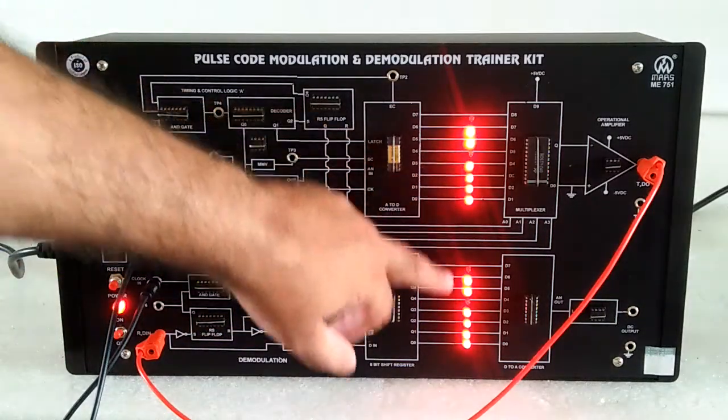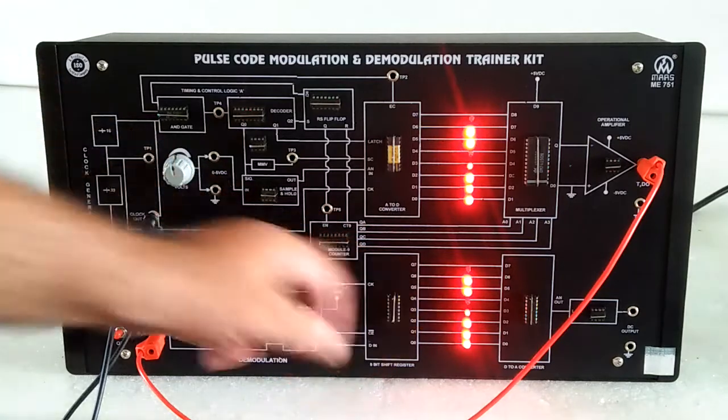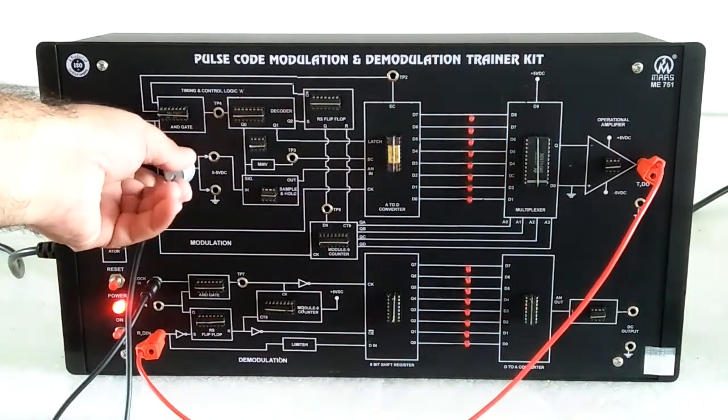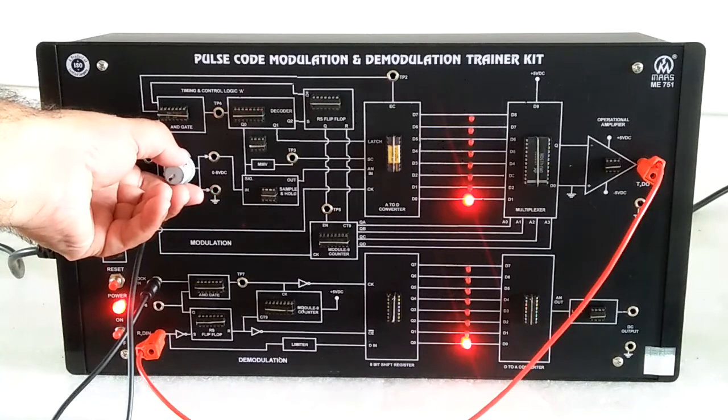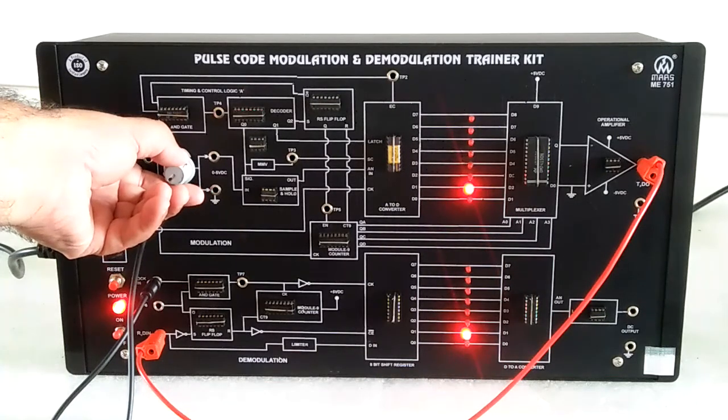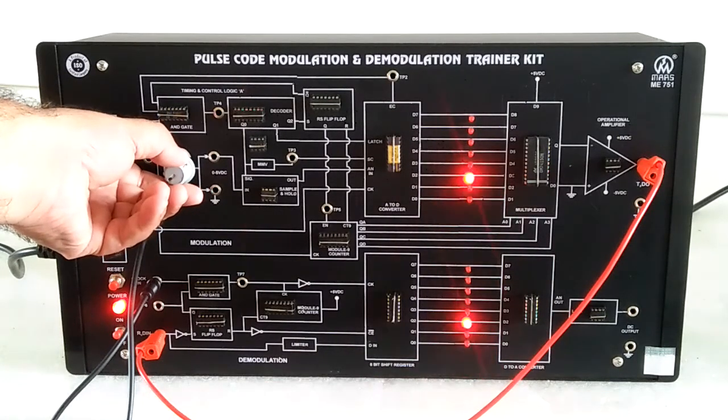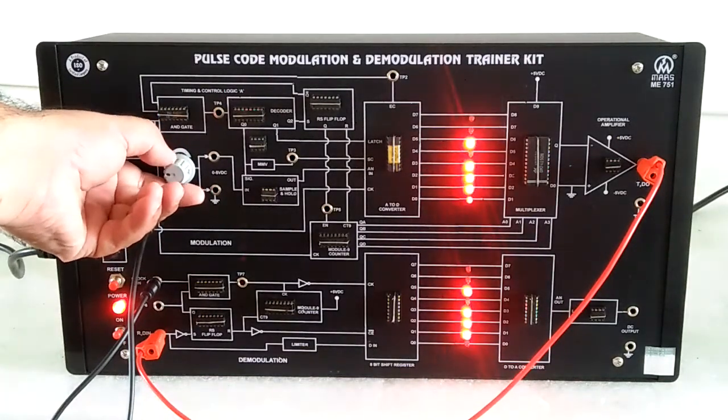And we get the same data at the input and at the output. Starting from 0, 1, 1, 0, 1, 1, 1, 0, 0, 1, 0, 1 and so on.